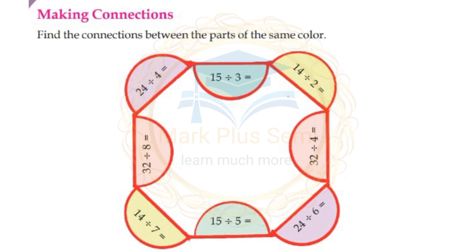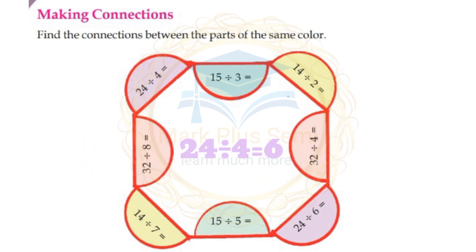24 divided by 4 is equal to 6. 24 divided by 6 is equal to 4. You can change the same color on the units.